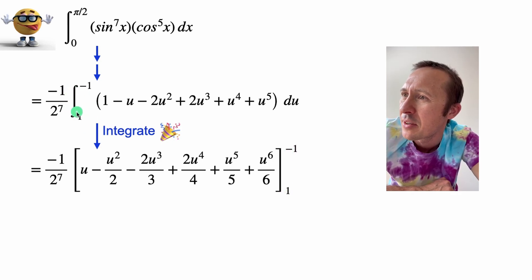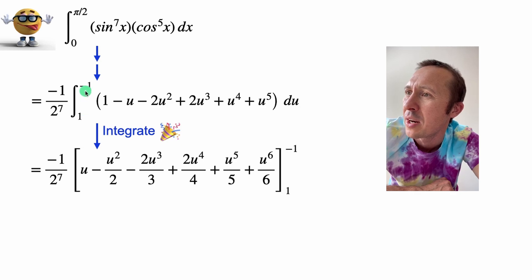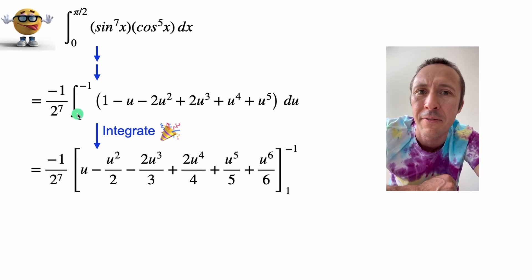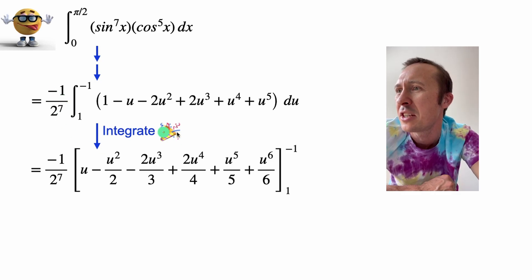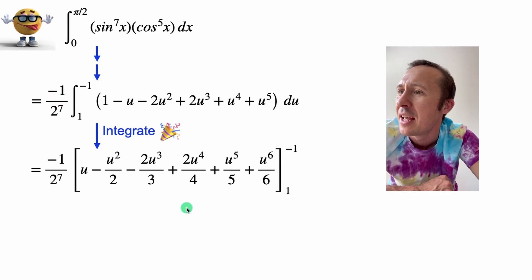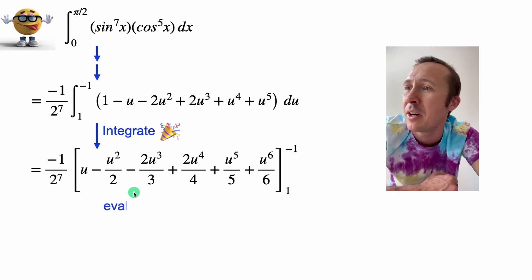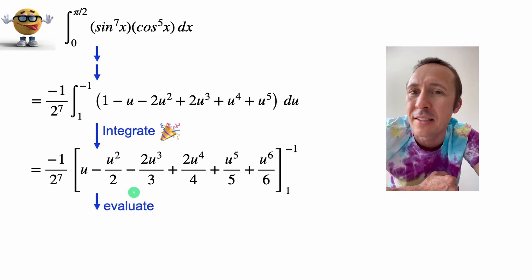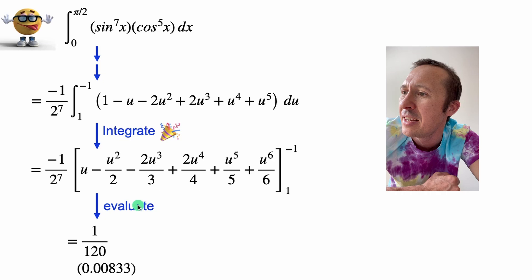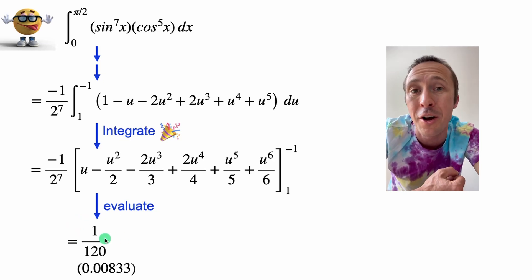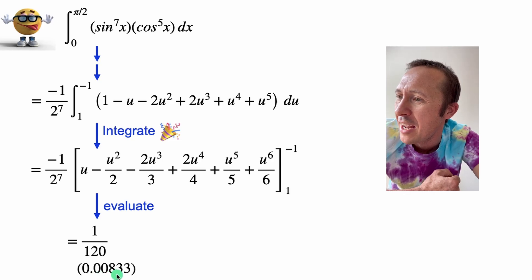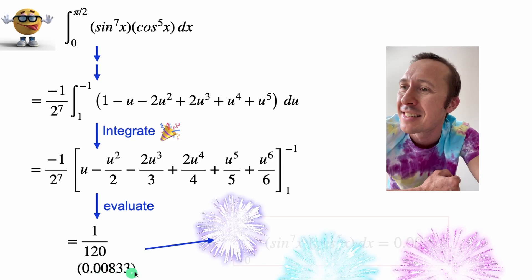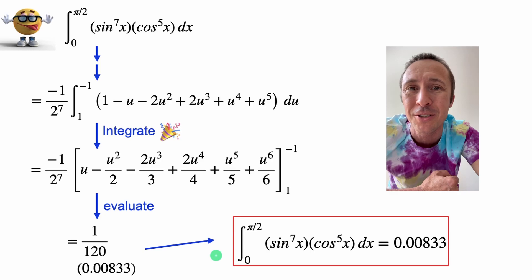You could flip the limits so that you have negative one down here and one up here. If you flip the limits, that's totally fine. You just change the sign. I just kind of left the limits as is, and now that we did the integral, we're there. So we'll just evaluate it from the two limits, and if you plug that in, you would get, with a common denominator, one over 120, which is 0.00833 repeating. So that's the answer to our integral in all its glory.